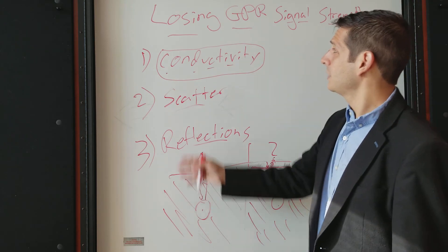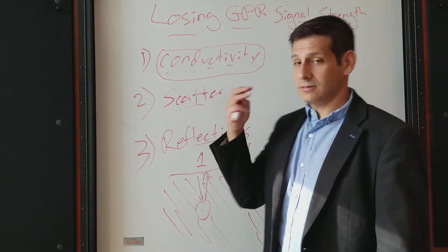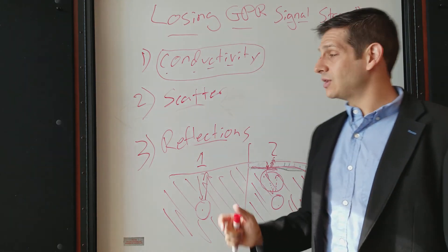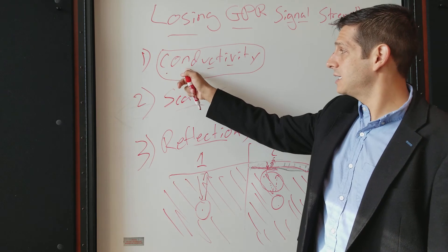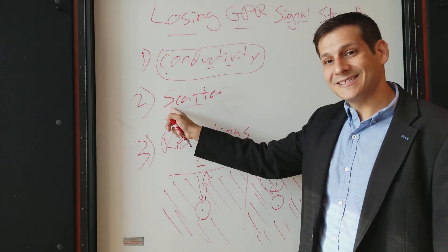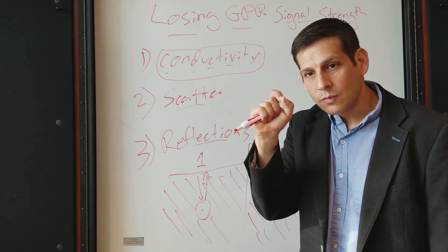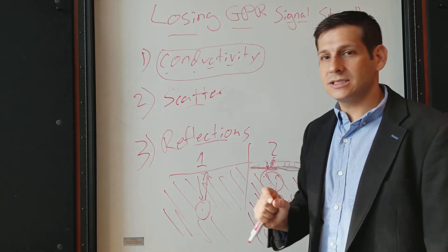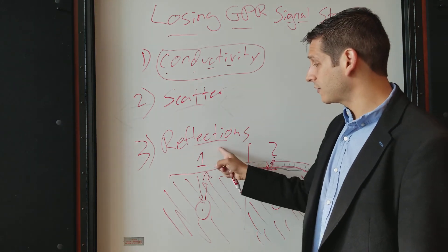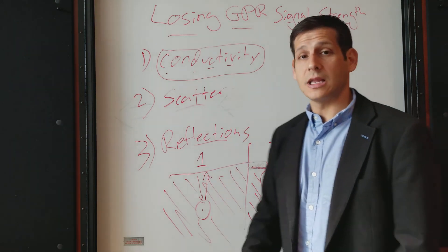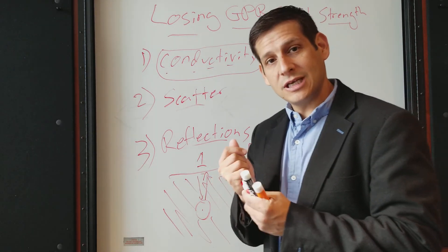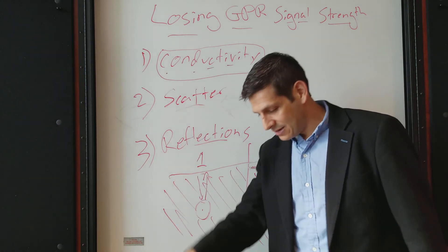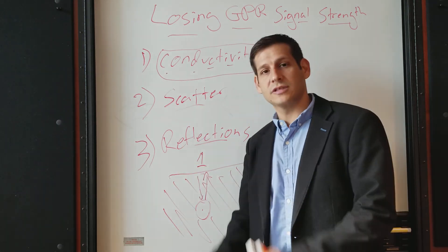So I hope this was helpful. Losing GPR signal strength, just for review, there are three ways that this happens. Number one, which is most understood, is conductivity. Number two is scatter off of small inconsistencies. And number three is reflection events that cause a lot of the energy to reflect back towards the ground surface, minimizing how much energy is left to transmit into the subsurface and find your target.